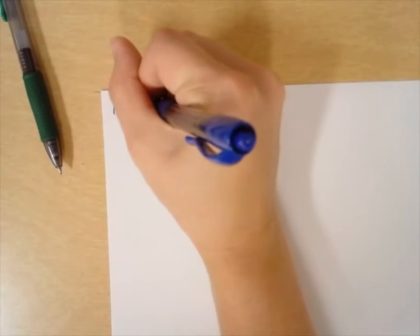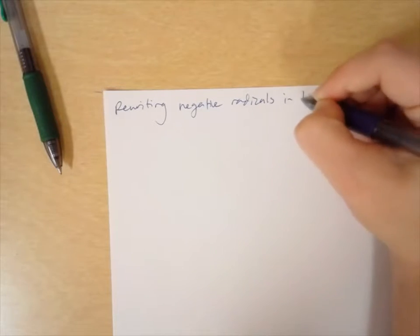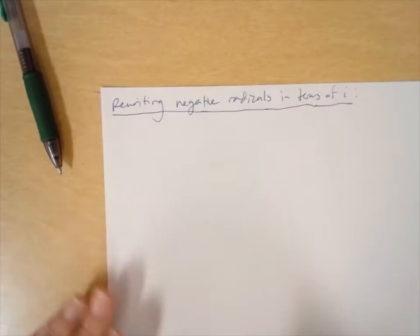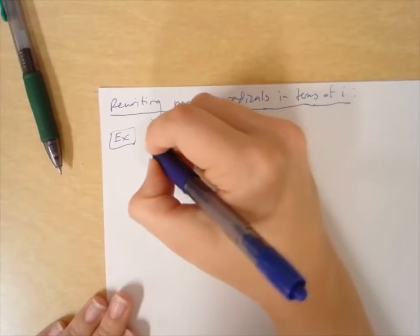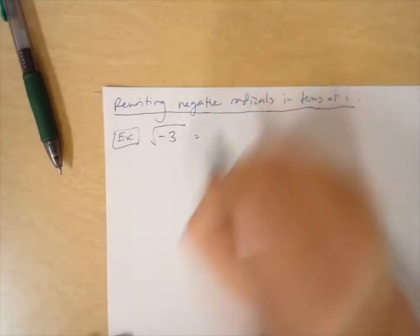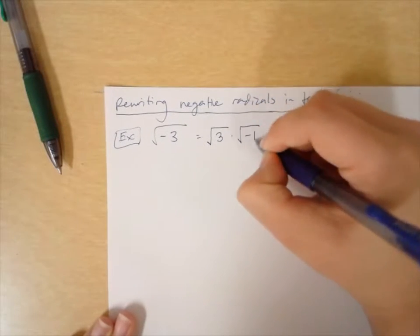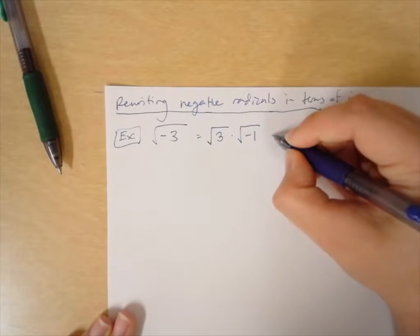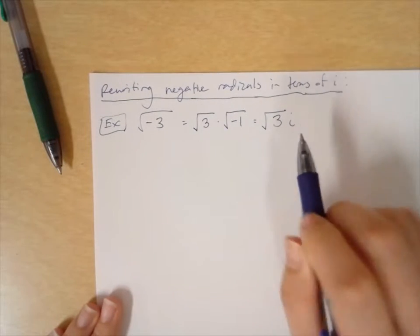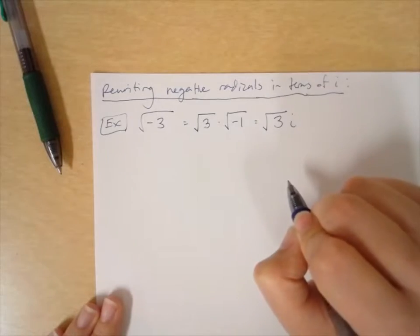Let's talk about rewriting negative radicals in terms of i. For example, if I have the square root of negative 3, I can separate it as the square root of 3 times the square root of negative 1. I know I can rewrite the square root of negative 1 as i, so what I really have is the square root of 3 times i. It's important to understand this distinction — it does not say square root of 3i; i is not underneath the radical.